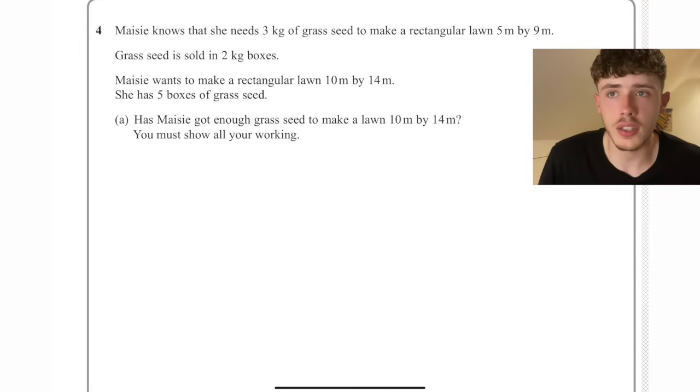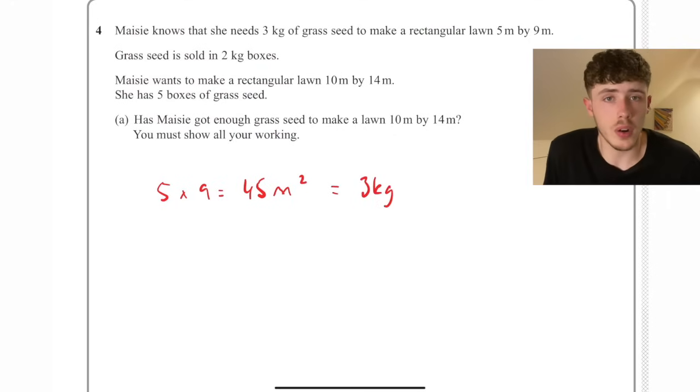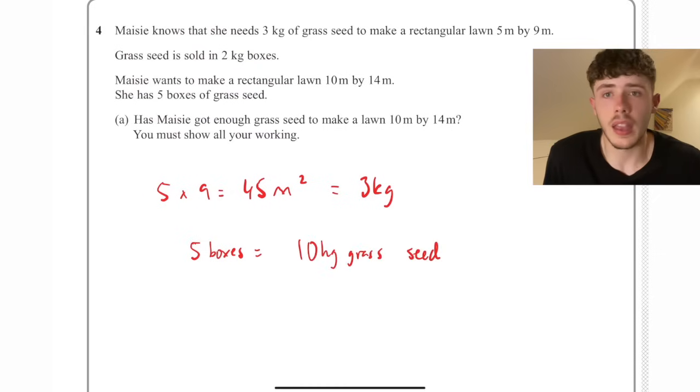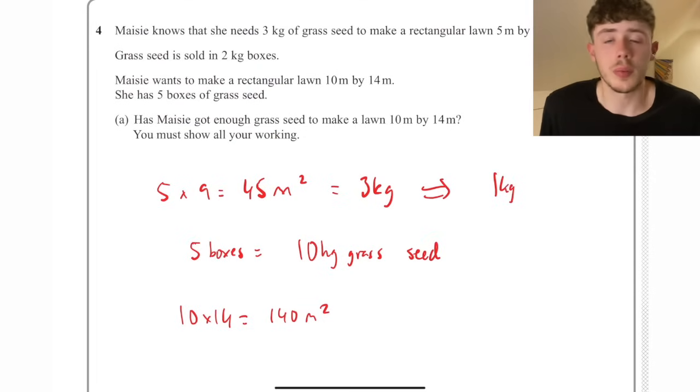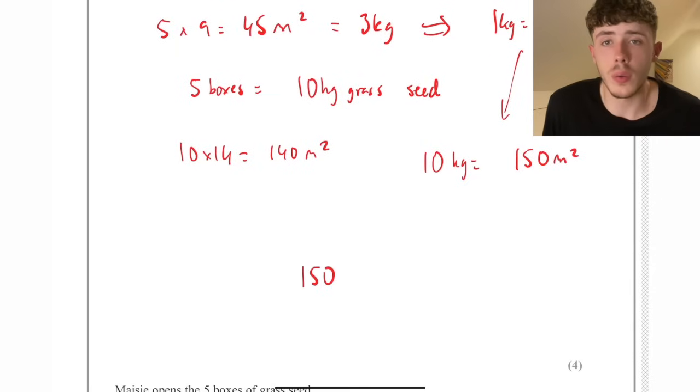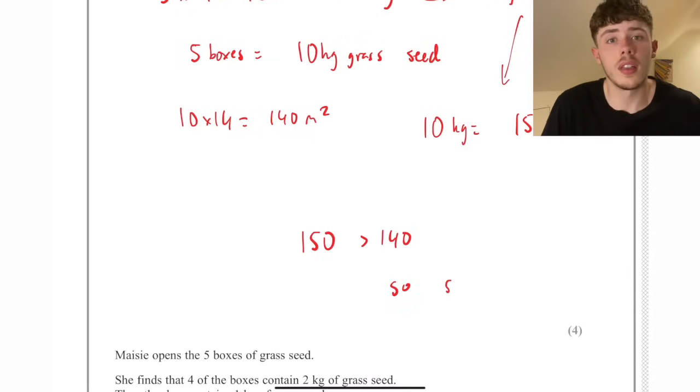Question four is quite long. We've got grass seed needed to cover a rectangular lawn 5 by 9, so the area is 45 metres squared. It needs three kilograms of grass seed to cover it. We want to work out how much one kilogram covers and find if it fits Maisie's lawn. Her lawn is 10 times 14, which is 140, and she has five boxes of grass seed corresponding to 10 kilograms. If one kilogram covers 15 metres squared, then 10 kilograms covers 150 square metres. So she has enough.